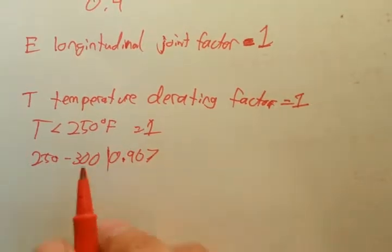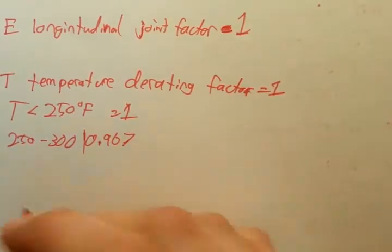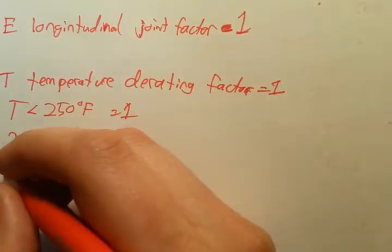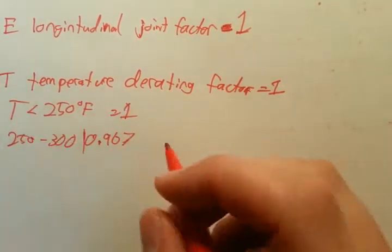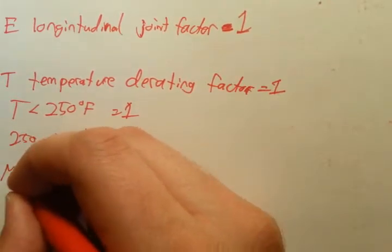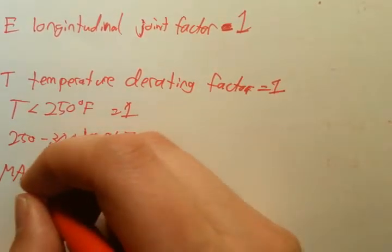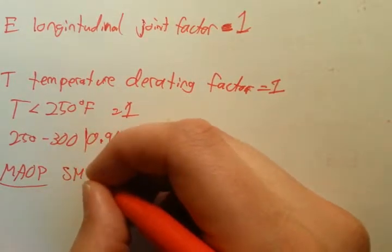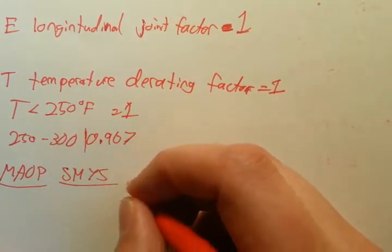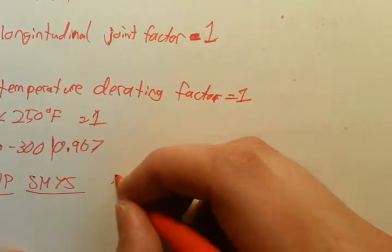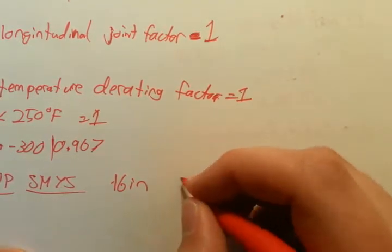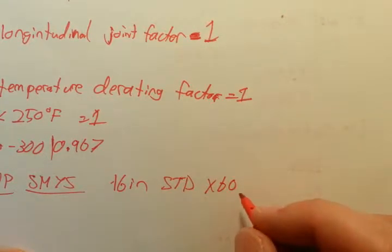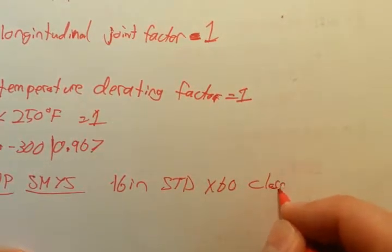Those are your three different design factors. We're going to do an example really quick. Let's say we want to find the MAOP and the yield pressure of a 16 inch pipe, standard wall, X60, and we'll say it's in a class 3 location.